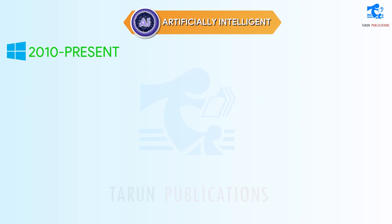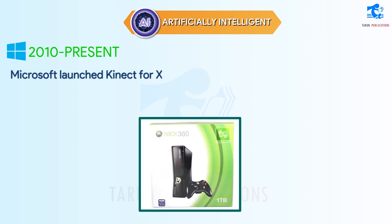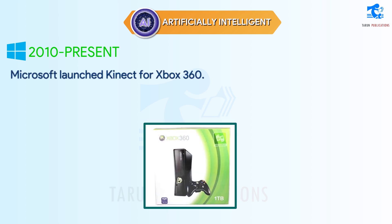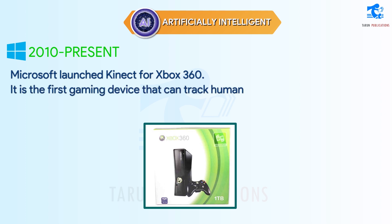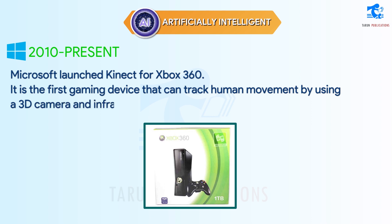2010-present. Microsoft launched Kinect for Xbox 360. It is the first gaming device that can track human movement by using a 3D camera and infrared detection.